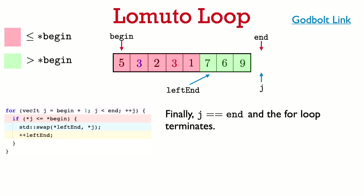Now we've worked through the example, but we still need to check two things in general: why the body of the for loop maintains the invariant (maintenance), and what the invariant holding at the end of the for loop means for us (termination).